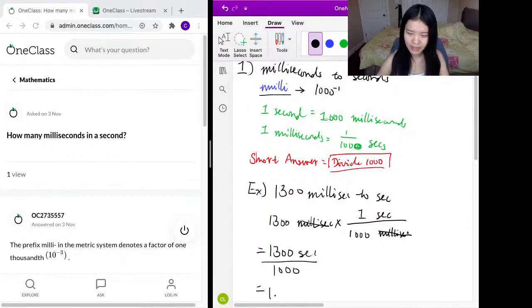So you know that it is one point three seconds. And that's how you convert from milliseconds to seconds. Let's look at the sample solution over here.